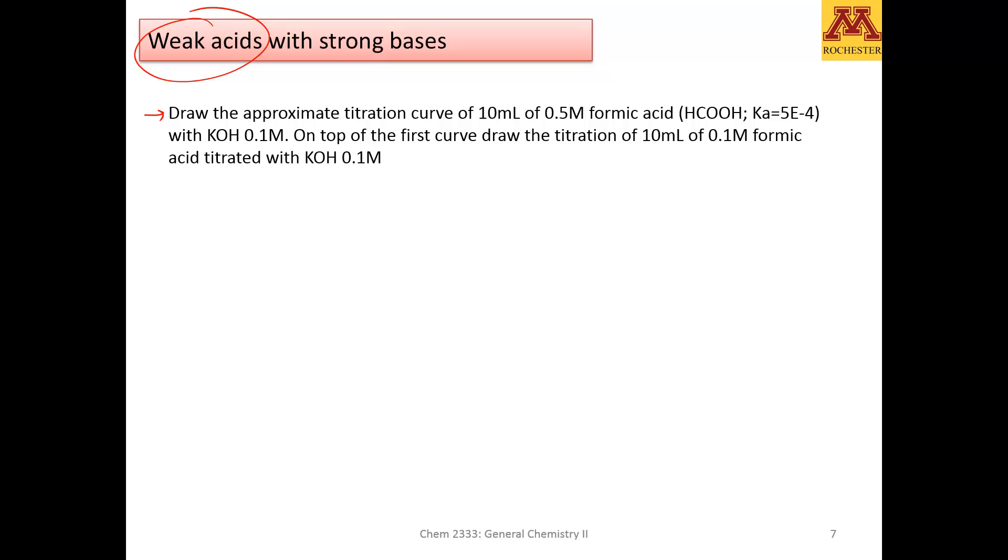Draw the approximate titration curve of 10 milliliters of 0.5 molar formic acid with a Ka of 5 times 10 to the negative 4 with potassium hydroxide 0.1 molar. First of all, notice that the acid is 5 times more concentrated. So if I have 10 milliliters of acid, which is 5 times more concentrated than the base, it'll take 5 times more volume.